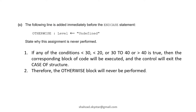The following line is added immediately before the end case statement: 'Otherwise level is undefined.' Why is this otherwise block never reached? Because if you implement conditions for less than 30, less than 20, 30 to 40, or greater than 40 — if greater than 40 is true, they will never reach the otherwise statement. Therefore, the otherwise block will never be performed.